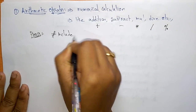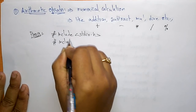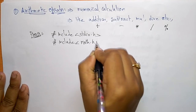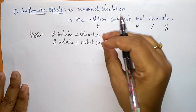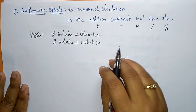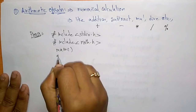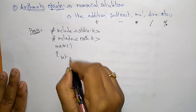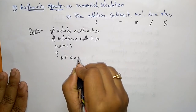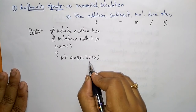Writing the program: hash include stdio.h — I'm also writing math.h, because if you are using some mathematical functions you need these library functions, which will be linked to the program at the time of compilation. Now writing the main program. Here I'm taking integer data type and initializing values: a is 20 and b is 10.